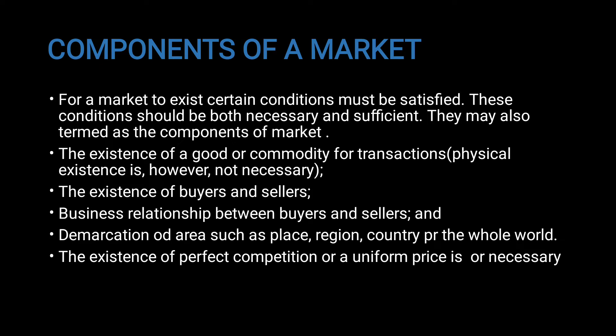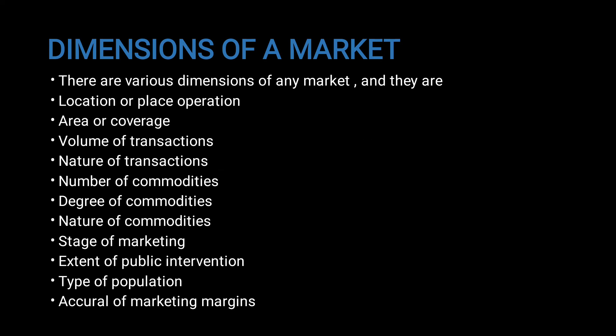The demarcation of area such as place, region, country, or the whole world is also important. The extension of perfect competition or uniform prices is also necessary. The various dimensions of any market include: location or place of operation, area or coverage, volume of transactions, nature of transactions, number of commodities, degree of competition, nature of commodities, stage of marketing, extent of public intervention, type of population, and marketing margins.